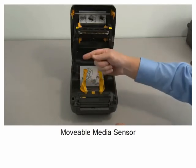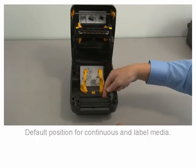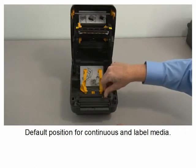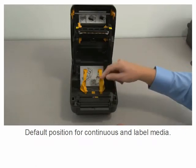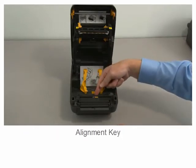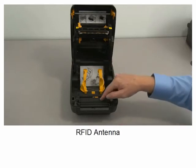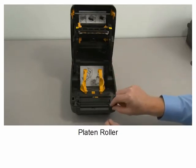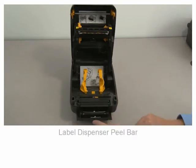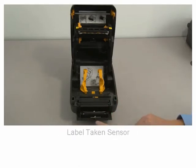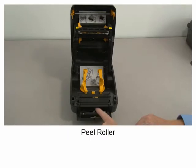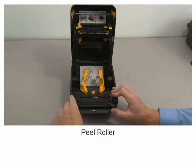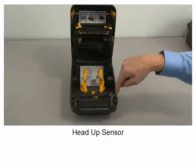Movable media sensor, default position for continuous and label media, alignment key, RFID antenna, flatten roller, label dispenser peel bar, label taken sensor, peel roller, and head up sensor.